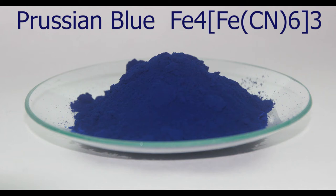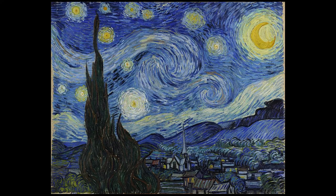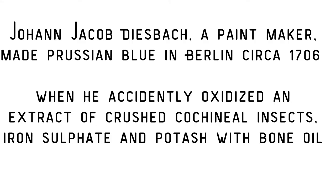Prussian blue is an extremely interesting compound. It's the world's second oldest pigment, first made in Germany in 1706.